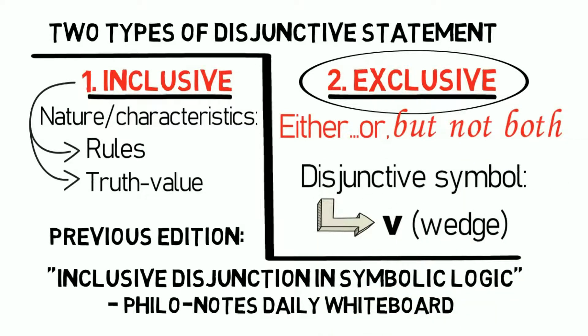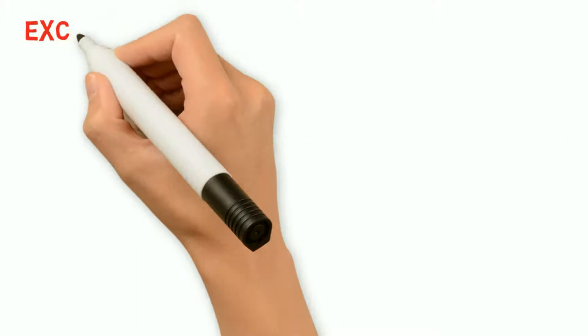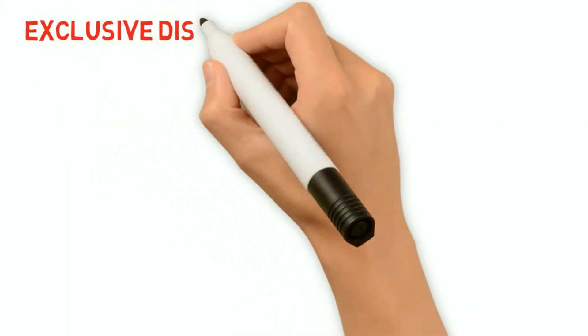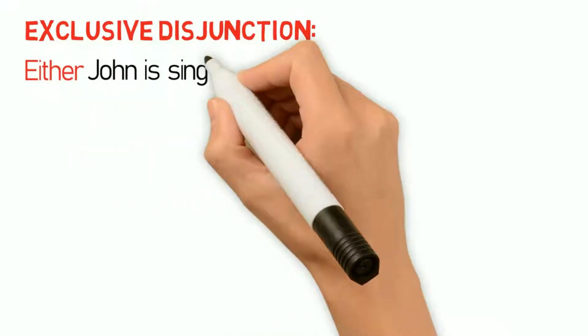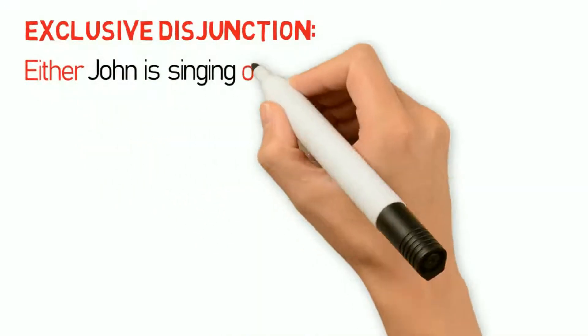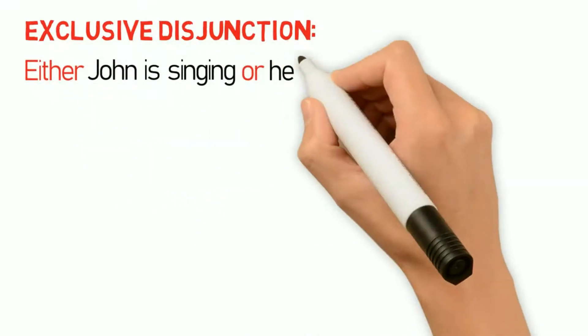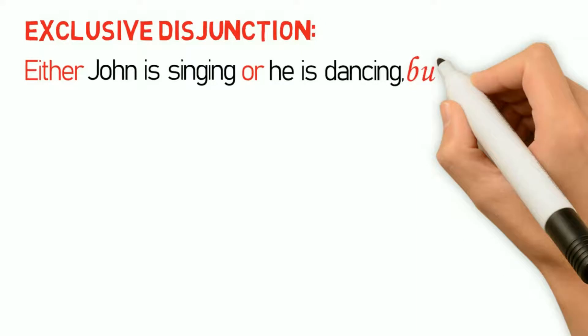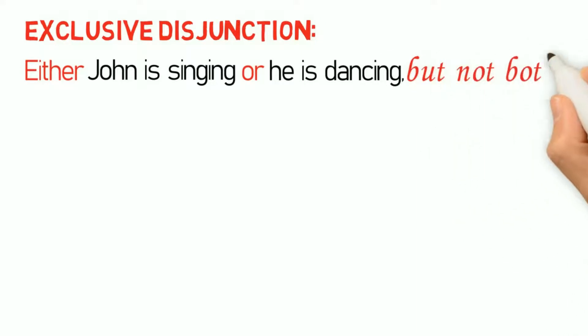However, an exclusive disjunction is symbolized differently from an inclusive disjunction. Consider this example: 'Either John is singing or he is dancing, but not both.'